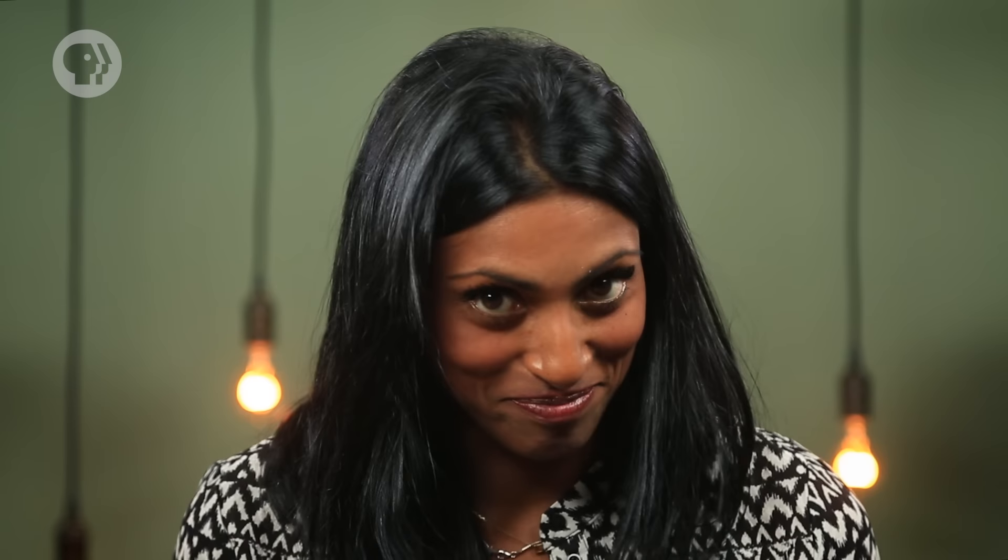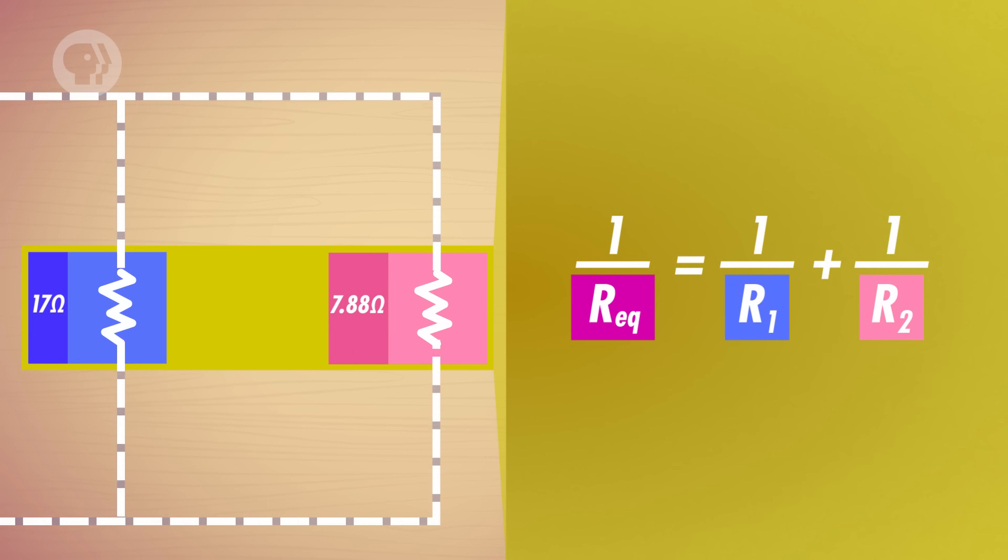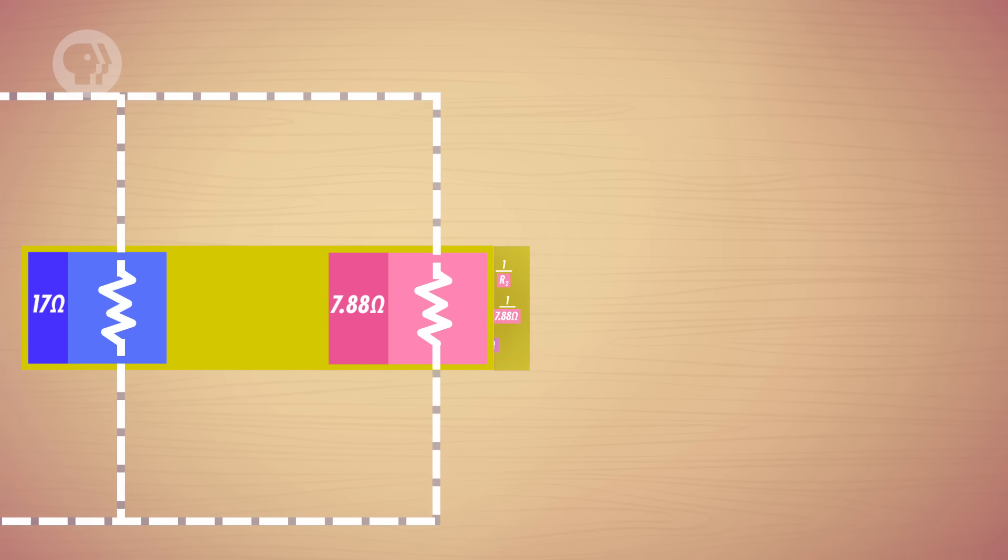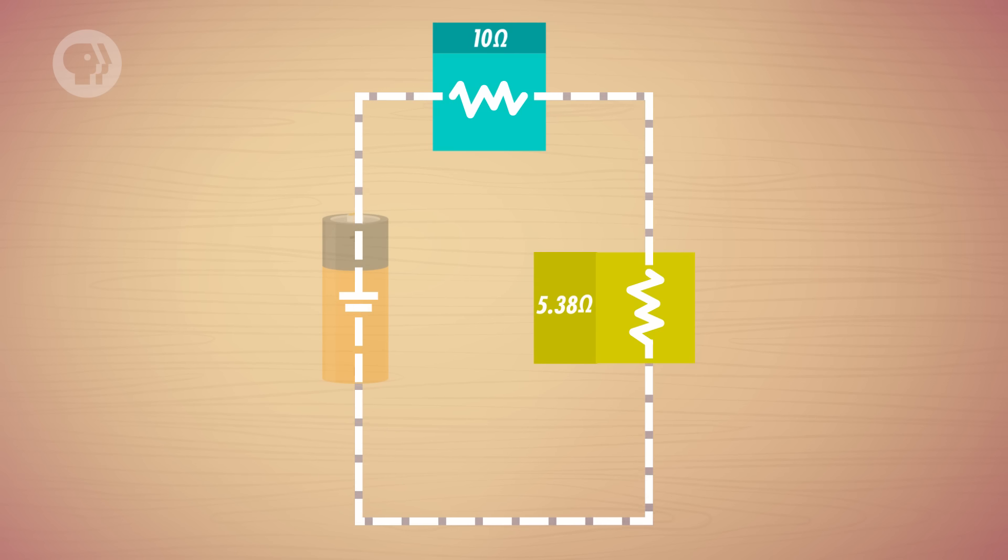Alright, you're almost there! Now let's combine the 17 ohm and the 7.88 ohm resistors, which are in parallel, into one resistor. And its resistance turns out to be 5.38 ohms. And with that, you're left with only two resistors in series, which you can combine to form a single resistor, with the equivalent resistance of 15.38 ohms.